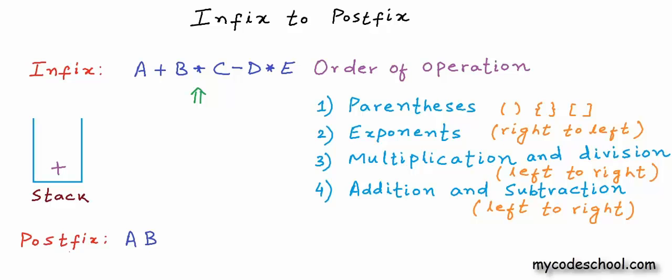Looking at the current operator, we can decide whether something from the stack can be placed into the postfix expression we are constructing. Any operator in the stack having higher precedence than the operator we are looking at can be popped and placed into the postfix expression. There is only one operator in the stack and it does not have higher precedence than multiplication, so we will not pop it. Multiplication itself will be pushed. If an element in the stack has something on top of it, that something will always be of higher precedence.